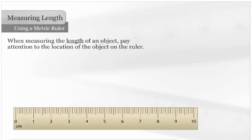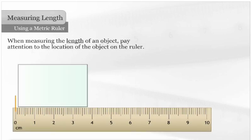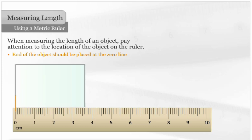When measuring the length of an object, pay special attention to the location of the object in relation to the ruler. The end of the object should be placed at the zero line. In this example, the rectangle is 36 millimeters or 3.6 centimeters.